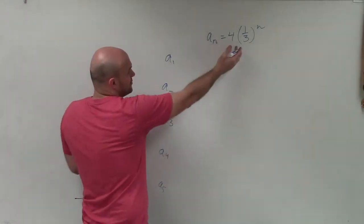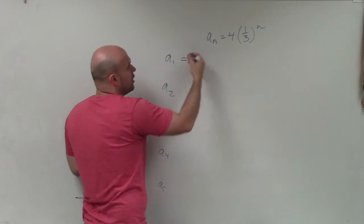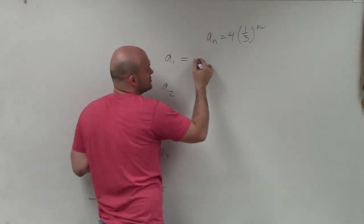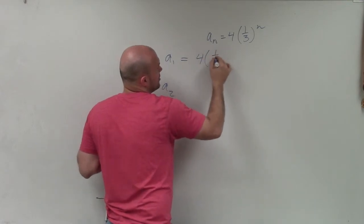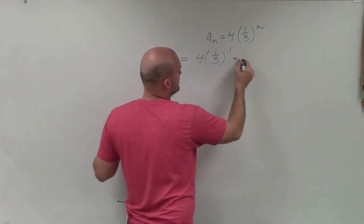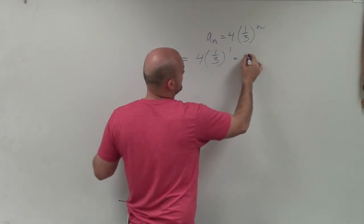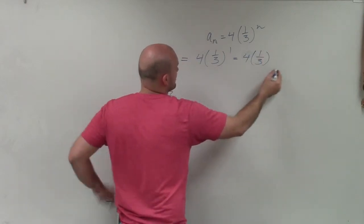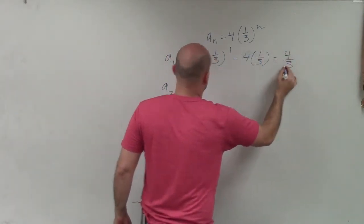So basically what we want to do, here's the rule for any term. To find a sub 1, all I'm simply going to do is take 1 and plug it in for n, kind of similar like a function. So I have 4 times 1 third raised to the first power. Well, 1 third raised to the first power is just going to be 1 third, so that would be 4 times 1 third, which is equal to 4 thirds.